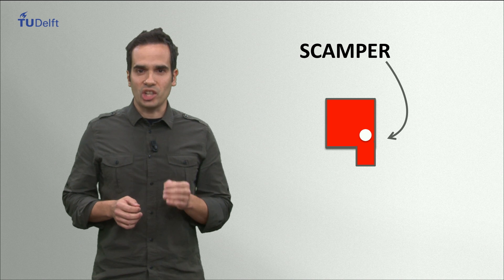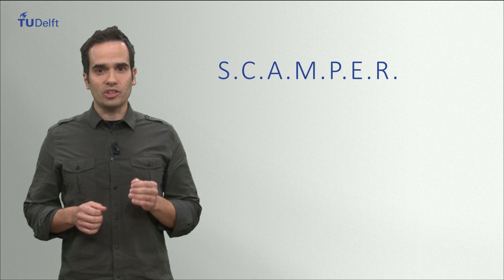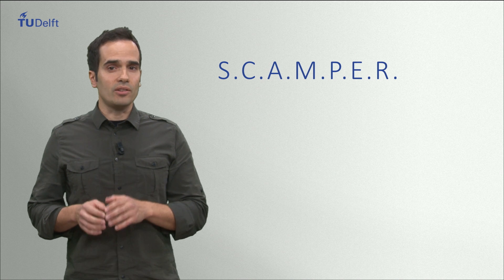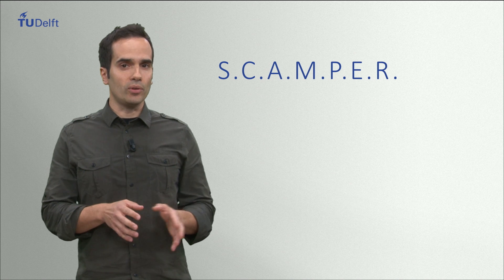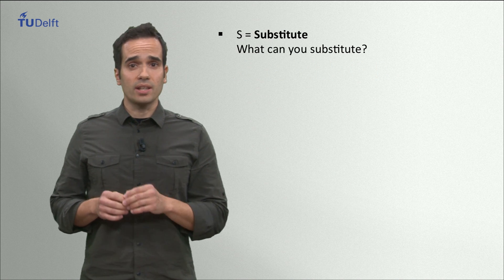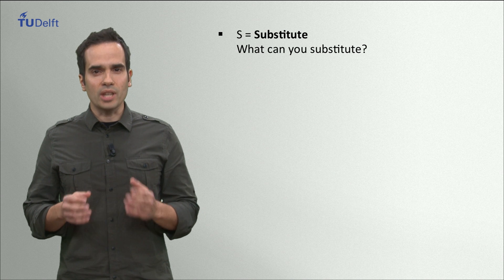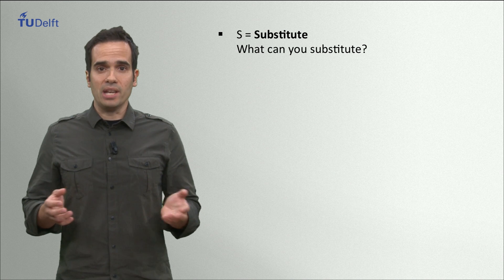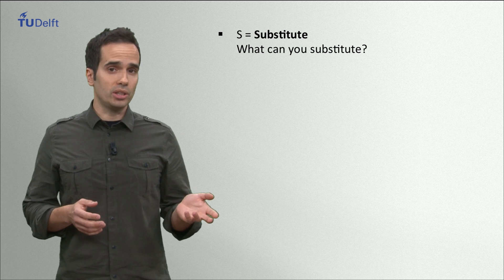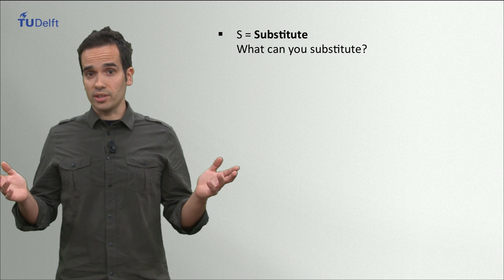SCAMPER is like a checklist of questioning actions that help in the generation of ideas. They are arranged in the following order. S stands for SUBSTITUTE. What can you substitute in your idea? Maybe elements, materials, colors, sizes?